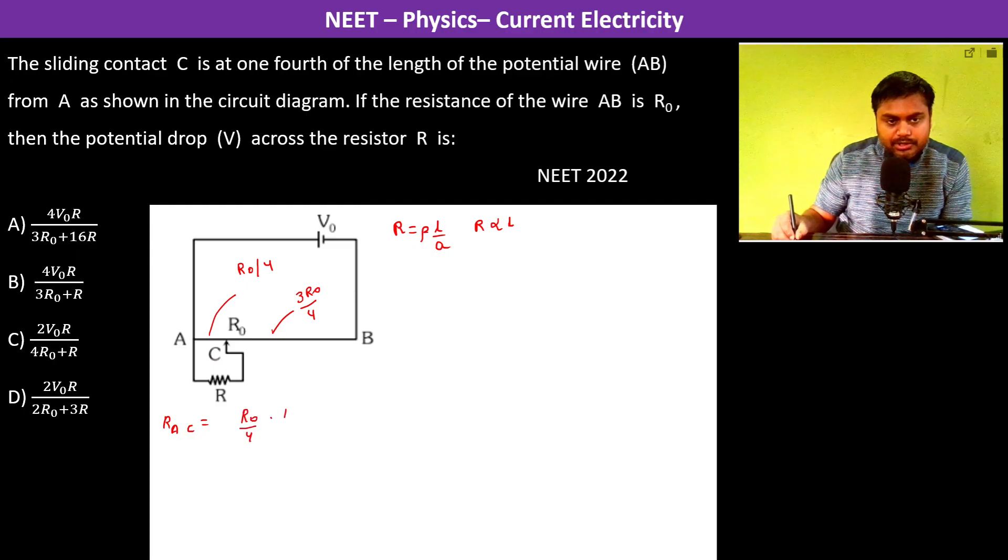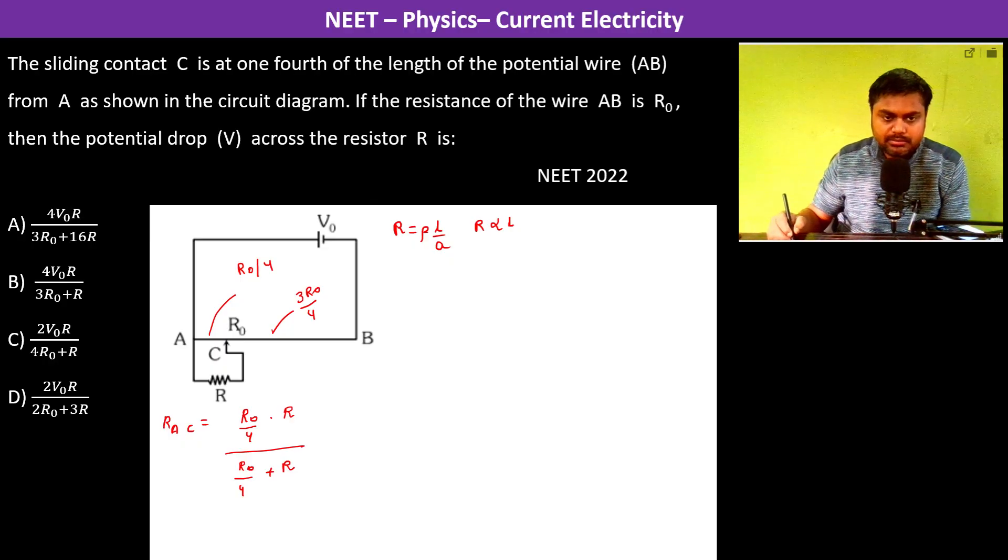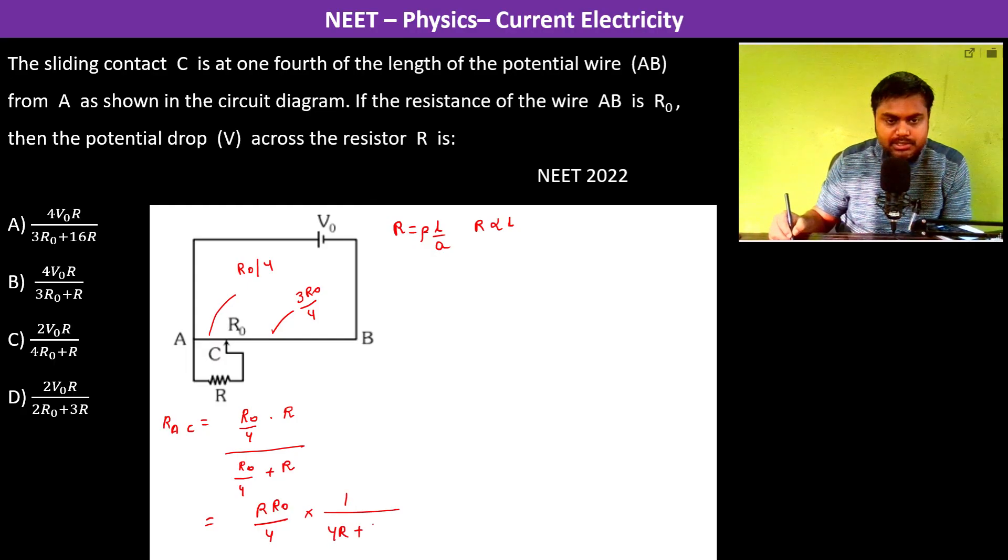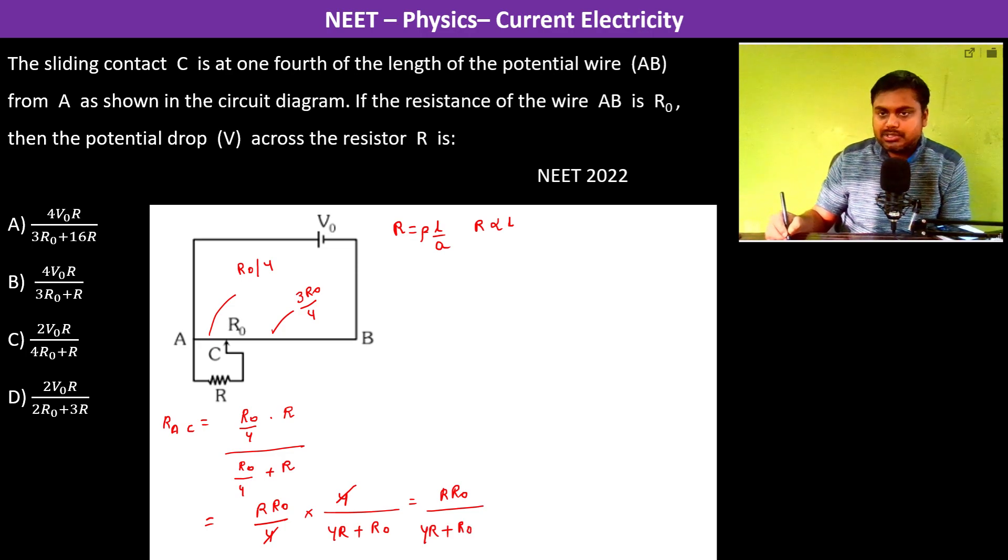Resistance across AC is R0 by 4 into R divided by R0 by 4 plus R by the parallel resistance formula. So this equals R into R0 by 4 divided by 1 by 4 R plus R0, and this is 4 so it cancels. So this is R R0 divided by 4R plus R0.